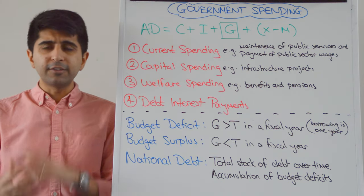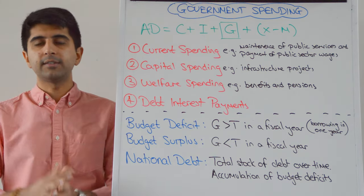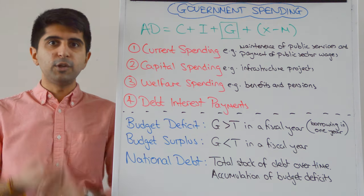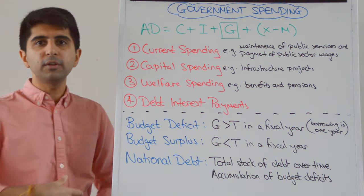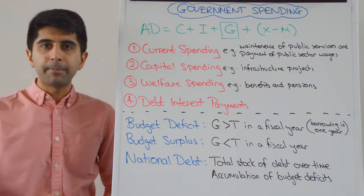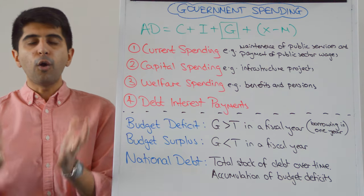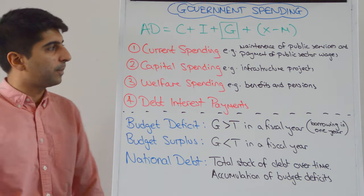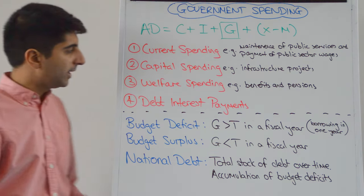Capital spending is spending on infrastructure projects — the building of new hospitals, new schools, new roads, new bridges, new airports, new ports, new railway lines. All of that counts as infrastructure spending, which is capital spending.